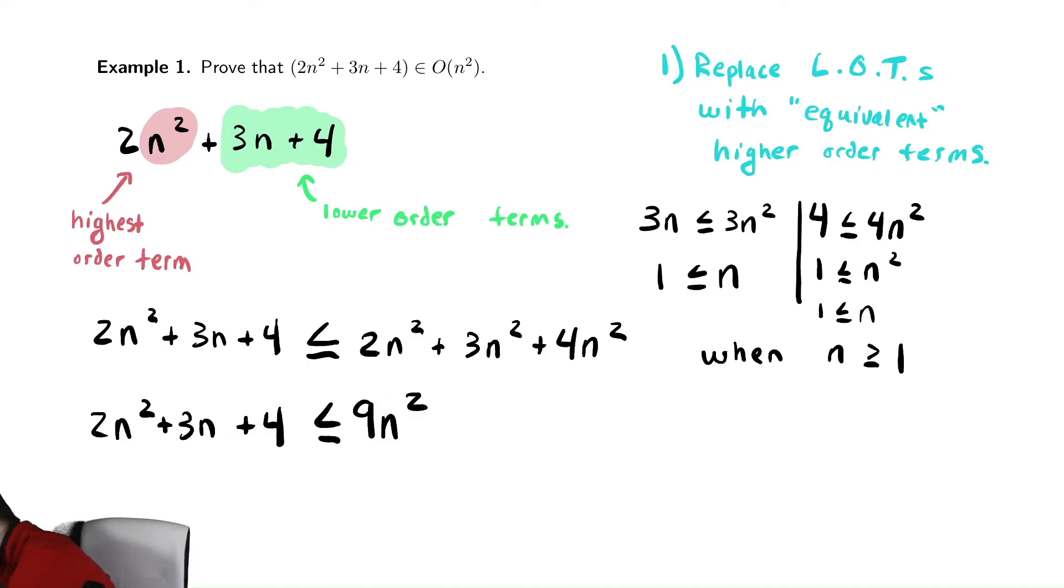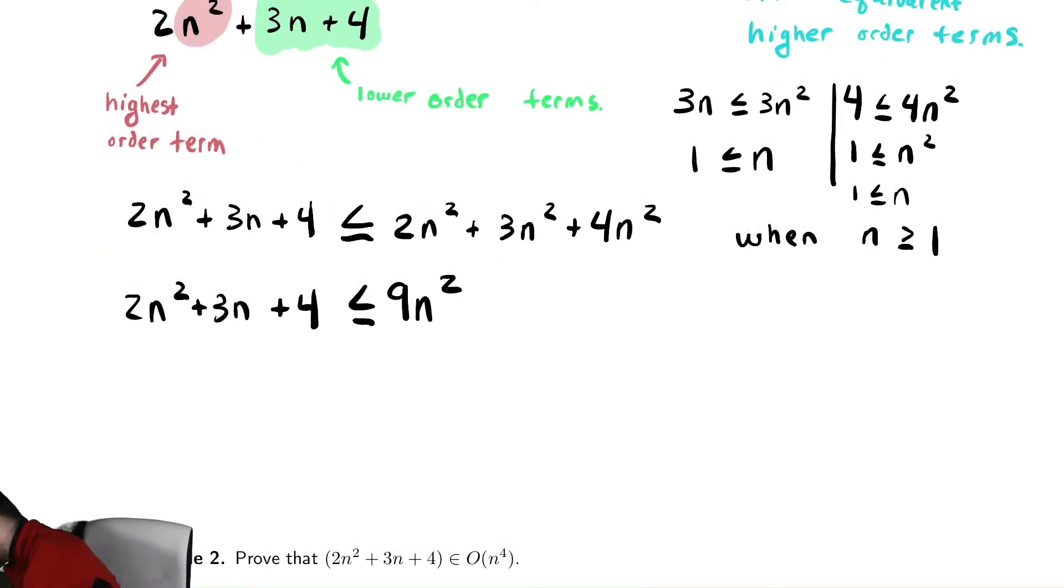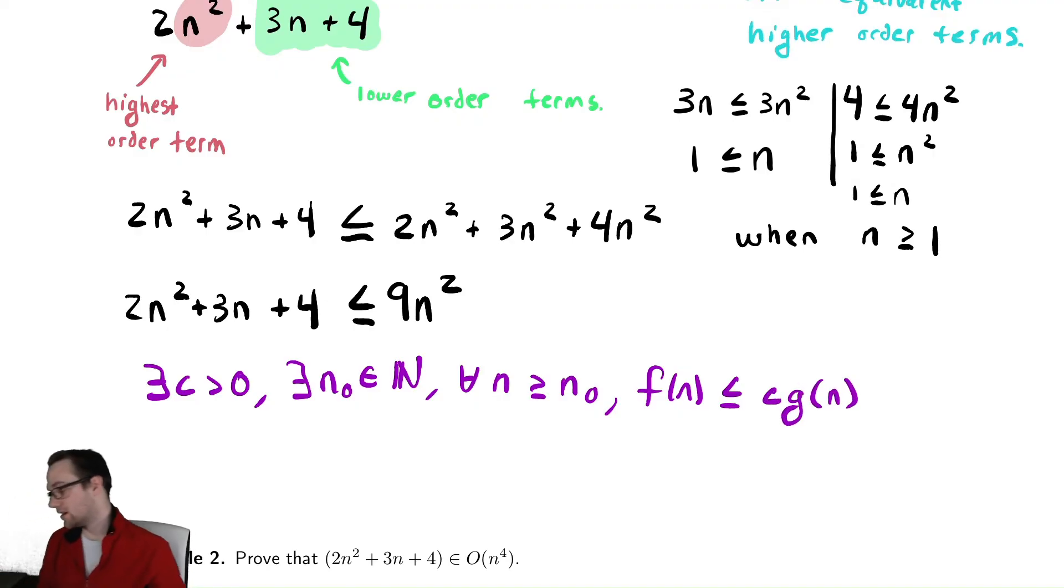In our definition, I will write down our definition here in symbols for us. It said there exists a c greater than 0 and an n₀ in the natural numbers such that for all n greater than or equal to n₀, our function f(n) is less than or equal to c g(n). So our goal is to find, for this particular example, our f(n) is 2n² + 3n + 4. So I'll highlight that to showcase. Our c is 9 and our n₀ is the caveat we had to make along the way.